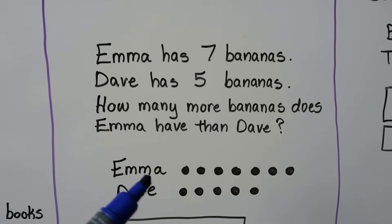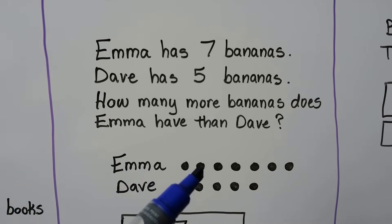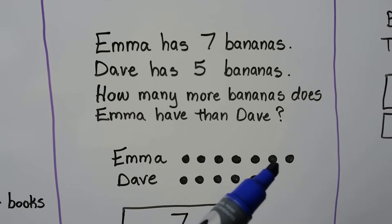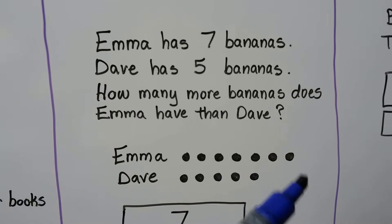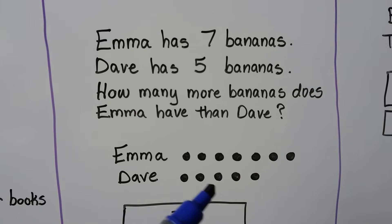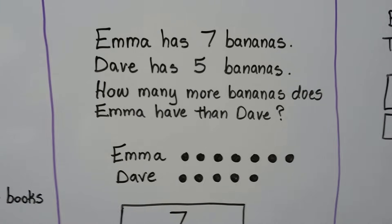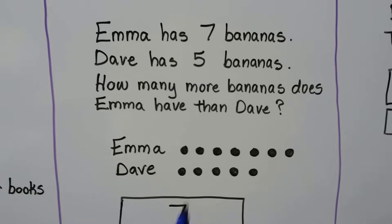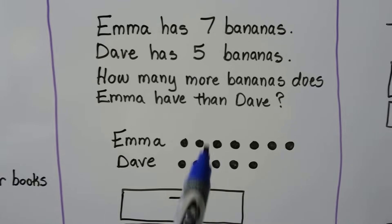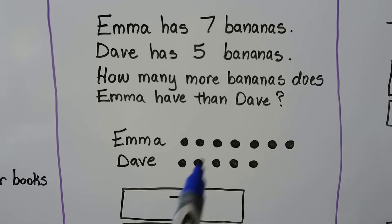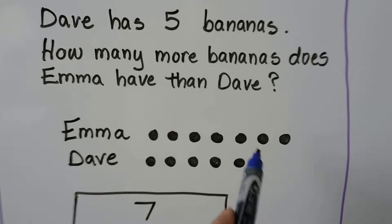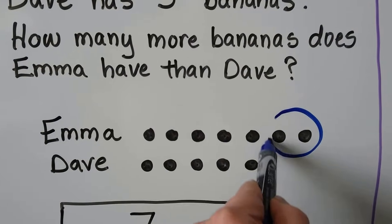We make a dot for each banana — one through seven for Emma, and one through five for Dave. By looking at the dots, we can see the difference right here.